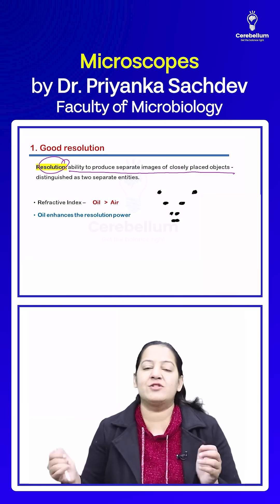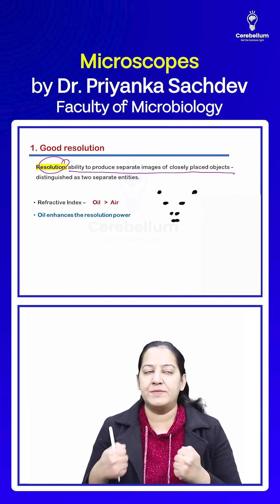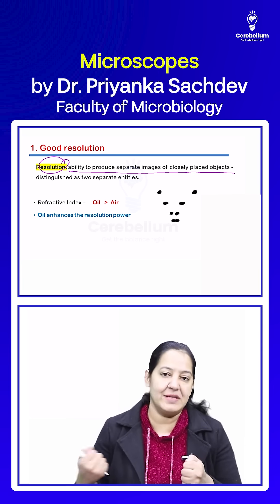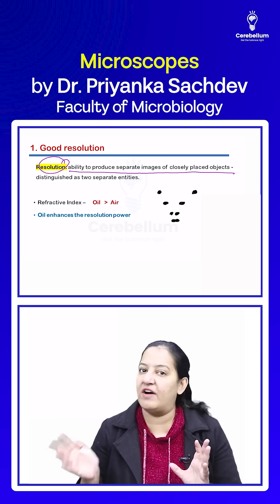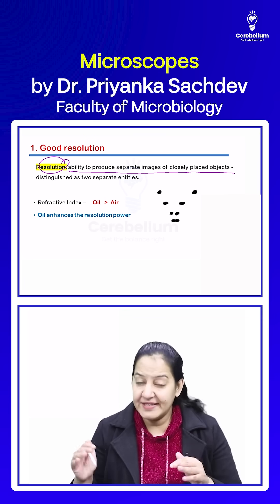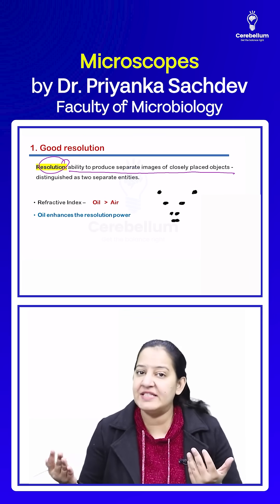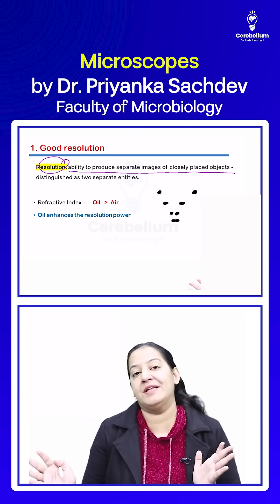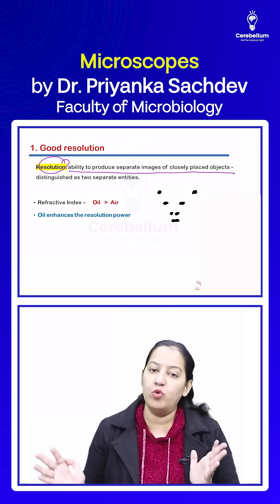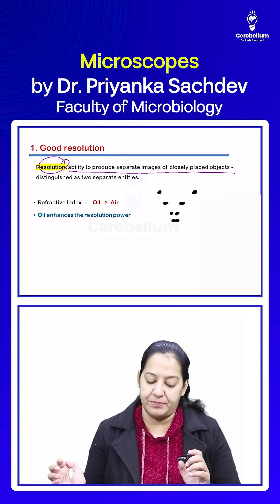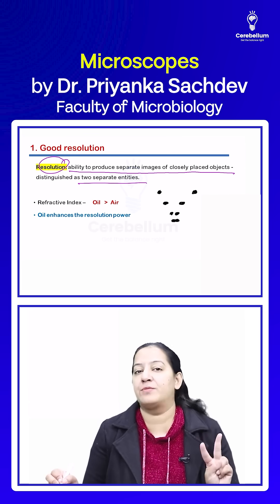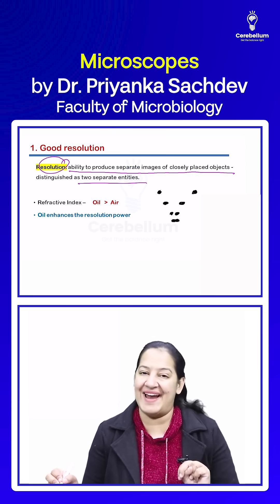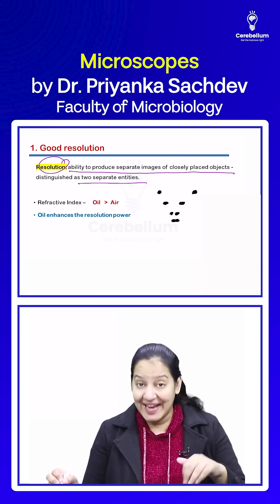So, what is resolution? Resolution is the ability to produce separate images of two closely placed objects. If two objects are placed too closely to each other, it's not that the microscope forms one image of them — it's the ability to form two separate images, distinguished as two separate objects, two different entities. This ability is known as resolution.